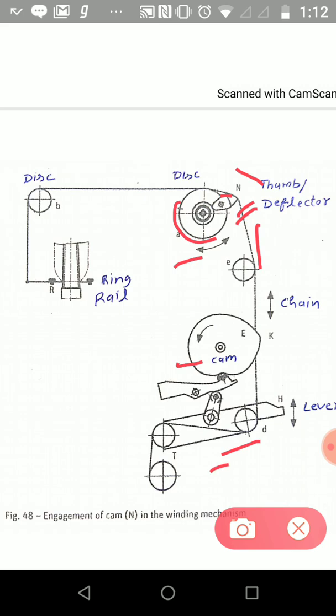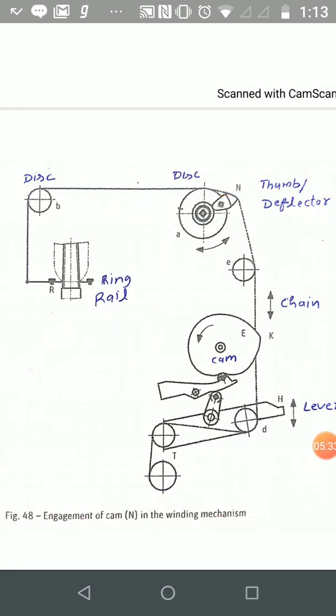Part of this is lost as deflection. As a result, the traverse stroke of the ring rail becomes shorter. However, since the length of yarn delivered during each traverse stroke is the same, the volume per layer is increased, thereby generating the curvature.